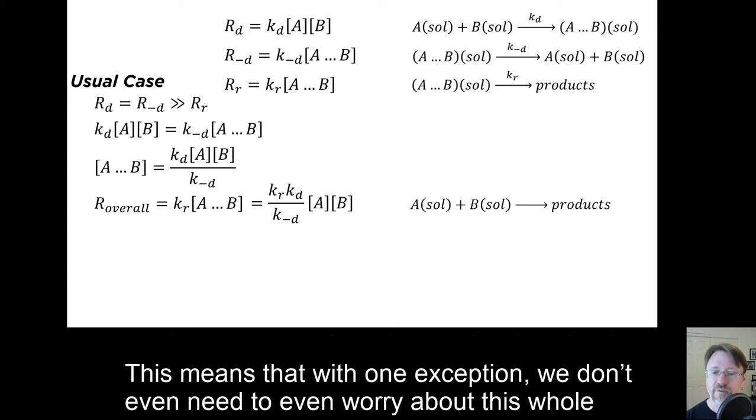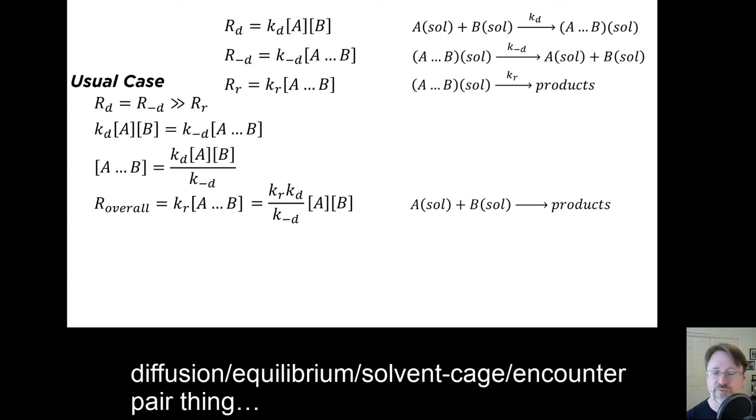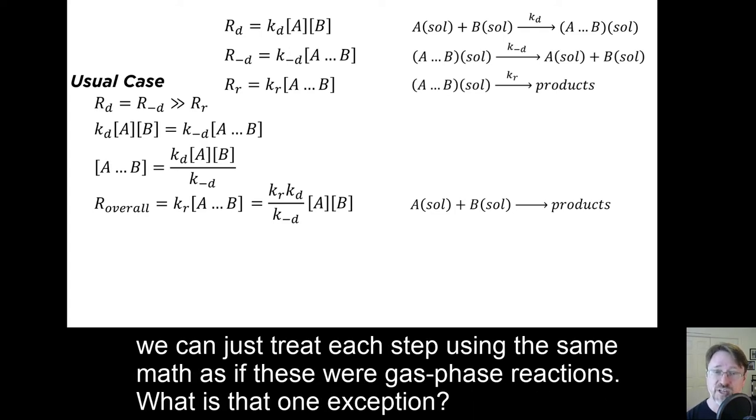This means that with one exception, we don't even need to worry about this whole diffusion-equilibrium-solvent-cage-encounter pair thing. We can just treat each step using the same math as if these were gas phase reactions. What is that one exception?